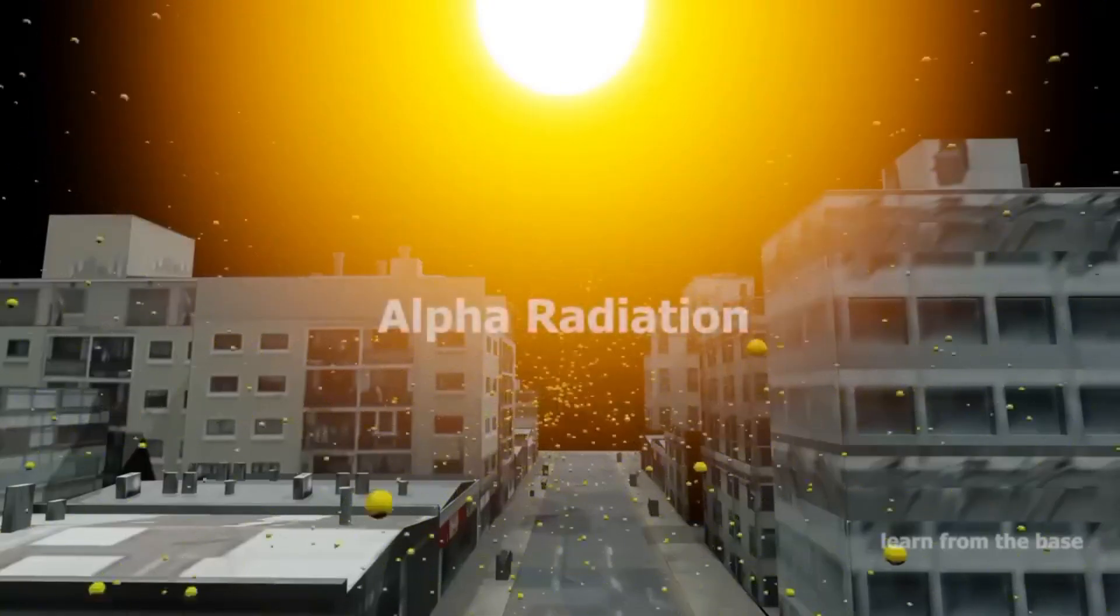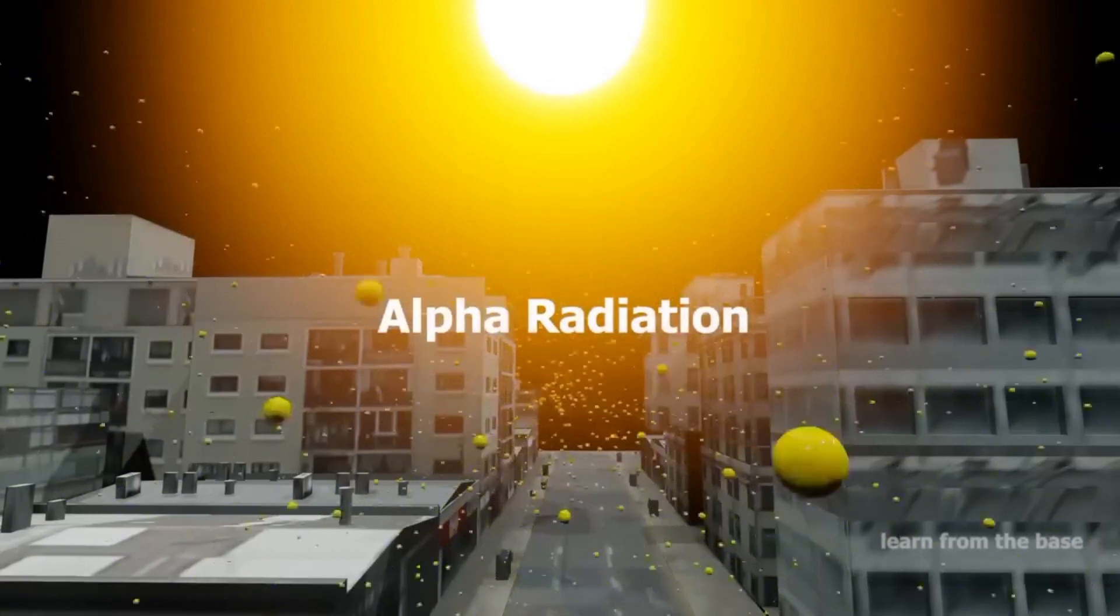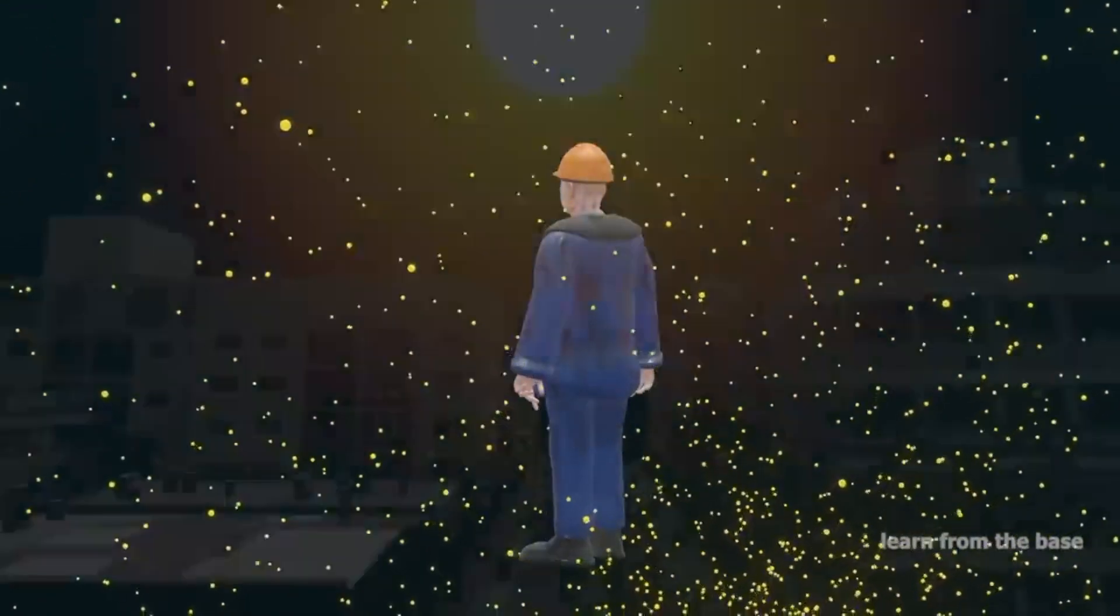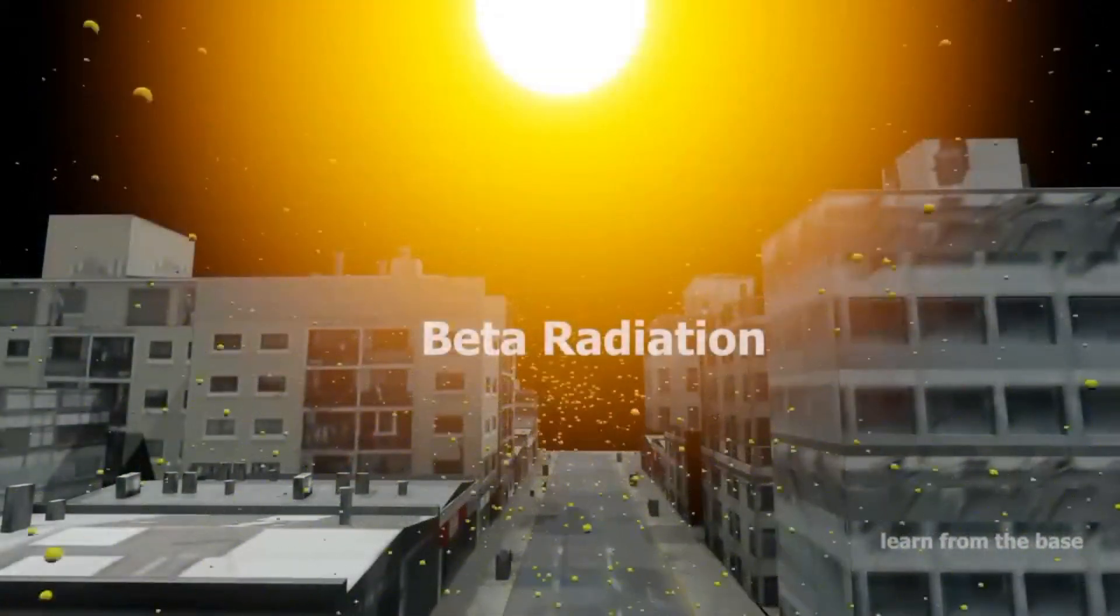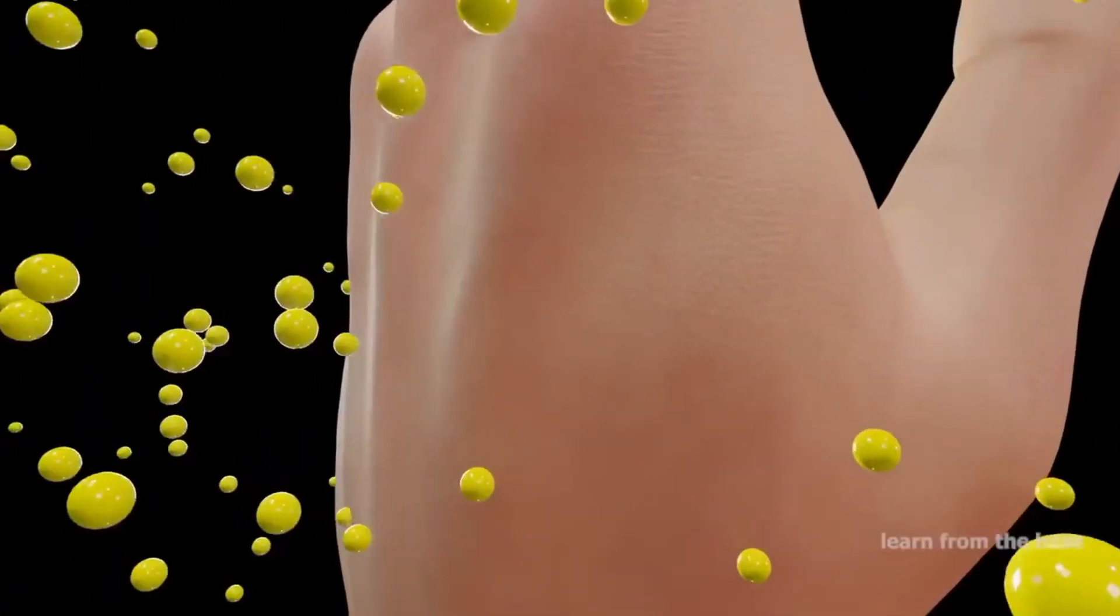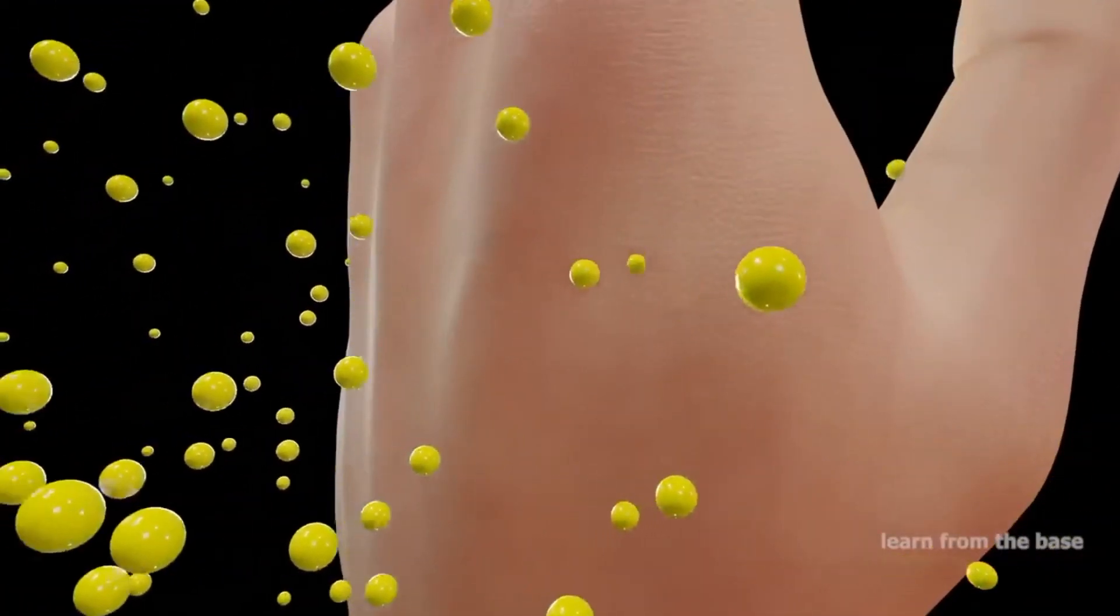Alpha particles pose no direct or external radiation threat. However, they can pose a serious health threat if ingested or inhaled. Beta particles are capable of penetrating the skin and causing damage such as skin burns. Beta emitters are most hazardous when they are inhaled though.